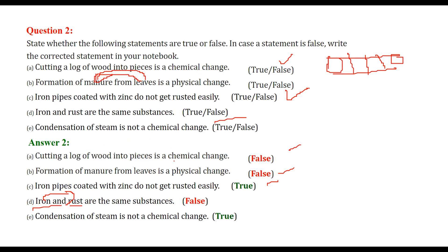Condensation of steam is not a chemical change - this is true, because it is a reversible process and the chemical form is not changing.